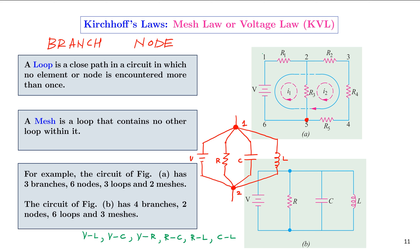A mesh is a loop that contains no other loop inside it. For figure A, the outer loop 1-3-4-6-1 contains two inner loops inside it. The meshes in figure A are: mesh 1 (1-2-5-6-1) and mesh 2 (2-3-4-5-2), giving two meshes for figure A. For figure B, there are three meshes: mesh 1 (V and R), mesh 2 (R and C), and mesh 3 (L and C).